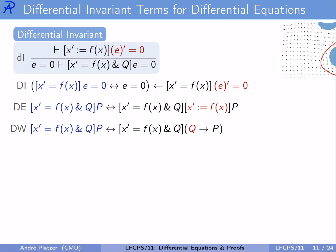Remember what we've done in the previous chapter: proving equational postconditions E equals 0 of a differential equation using the differential invariance proof rule. That derives from the differential invariant axiom for equations together with the differential effect axiom, and now we also have the differential weakening axiom available to handle the evolution domain constraint — something we didn't take into account last time. Our differential invariant axiom told us that E equals 0 always holds after an ODE if and only if it holds right now, provided the rate of change E prime is always 0.